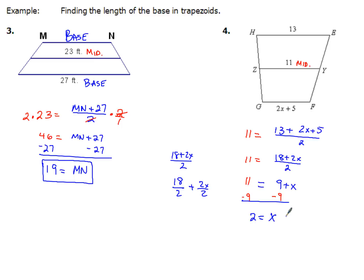So that's the value of x. But I wasn't done, because they actually wanted me to find the length of the base. So the length of the base GF - because I know HE, that has a length of 11, or a length of 13. But GF, so I'm going to have to plug the 2 back in. So I'm going to have 2 times 2 plus 5. When I multiply and add, 2 times 2 is 4 plus 5. GF has a length of 9.